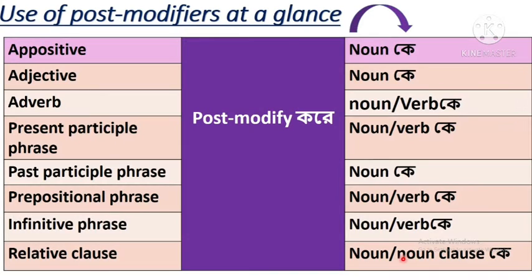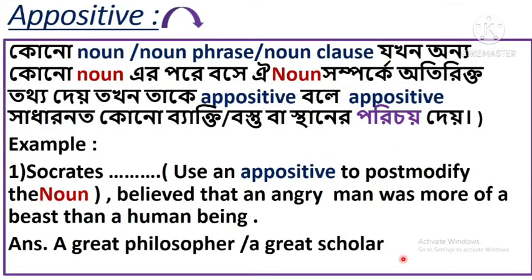An appositive modifies a noun. An adverb modifies a noun or verb. An adjective modifies a noun. A present participle phrase modifies a noun or verb. A past participle phrase modifies a noun. A prepositional phrase modifies a noun or verb. An infinitive phrase modifies a noun or verb. A relative clause modifies a noun or noun clause.